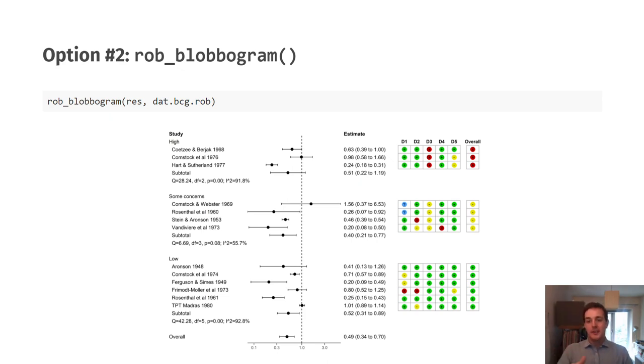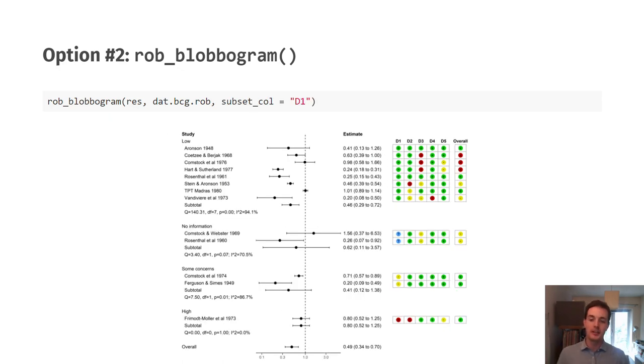Just to note you have a lot more flexibility than just stratifying by the overall risk of bias. For example if you were particularly interested in bias due to randomization which is domain one in this tool you can specify that that's the domain you want to stratify on and you see here there's now a lot more studies at low risk of bias for that specific domain. Again it's starting to get people thinking about actual study results and risk of bias results together rather than thinking of them as two independent entities which is what often happens.